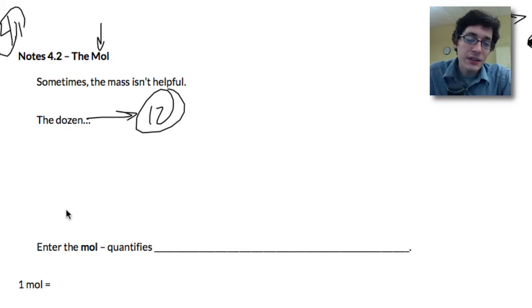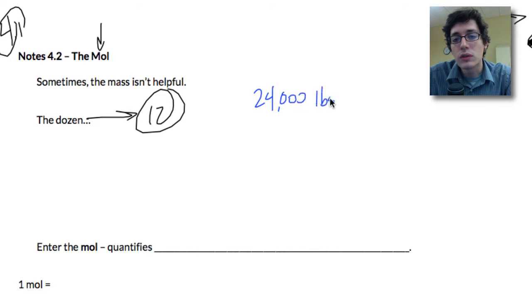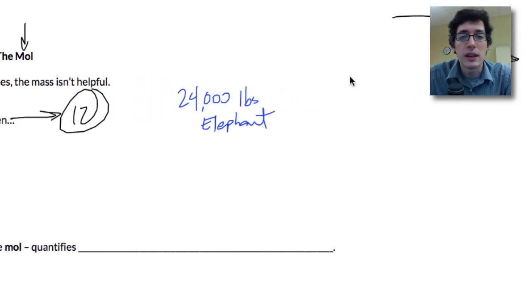So when we're talking about masses of things, when we compare the masses, let me give you this quick example. Let's say you've got 24,000 pounds of elephant and I compare this and I say I've got 24 grams of pencils.